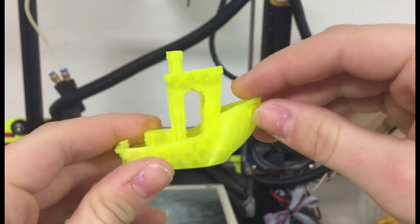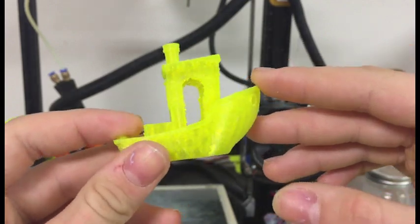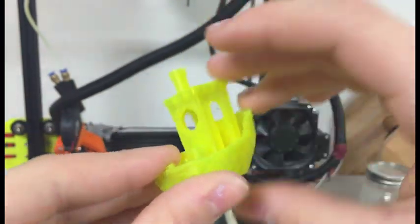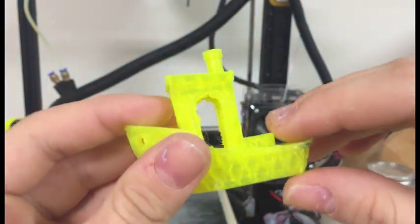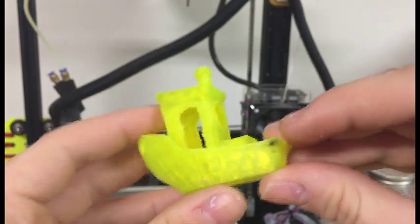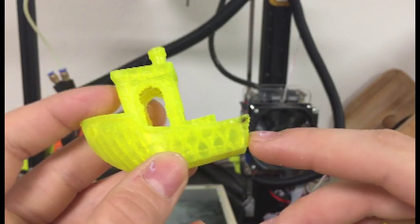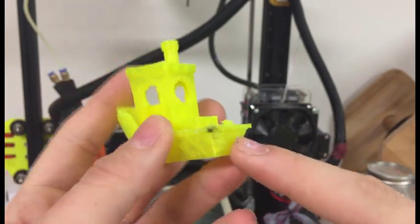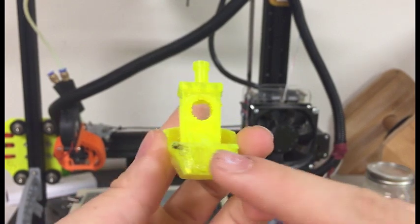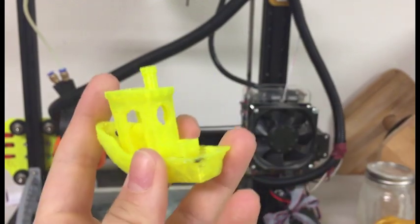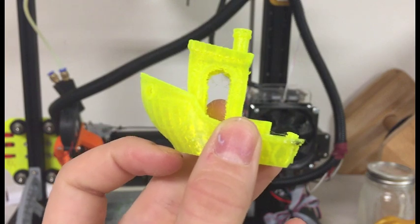So, my next print was this Benchy. Now, I did not have my retraction settings set very well for this print. So, you can see it's kind of stringy. I did try to clean it up a little bit with an X-Acto knife. These overhangs didn't do the best here. Now, that was probably my retraction settings. And then there was a little globbing. But then, I did have this problem right here. I had to turn on the fan, which was very surprising for me. It just was too soft every time I would go over it. So, that's why the back does not look the best.